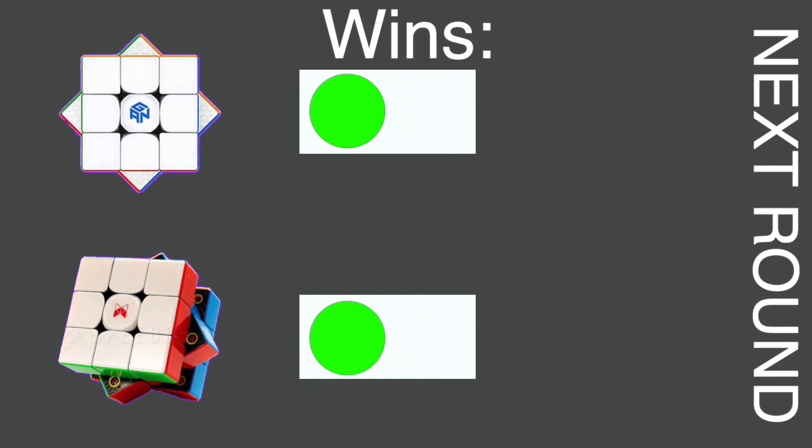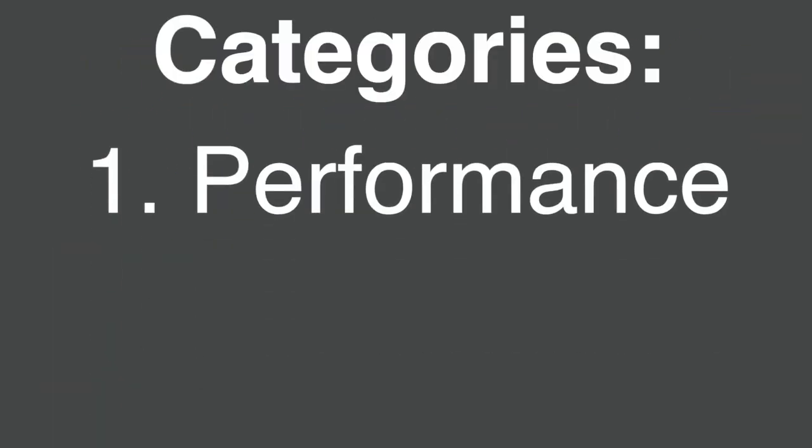Each battle will be made up of three categories. The cube that wins two of the three categories moves on to the next round. The categories are performance, customization, and value for money. So let's get back to it.